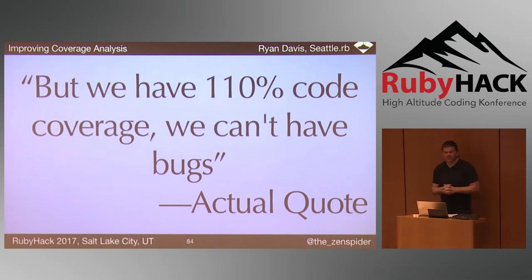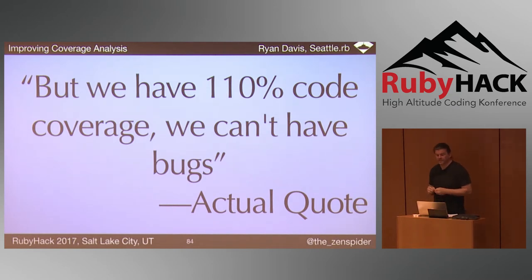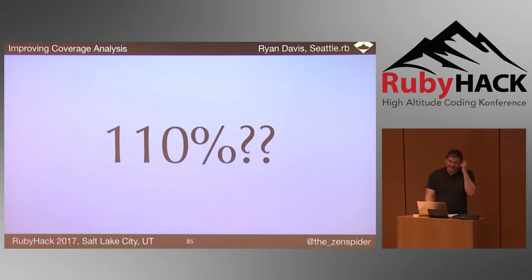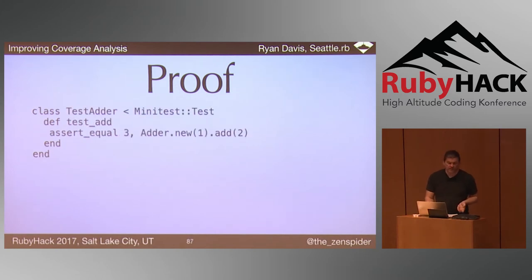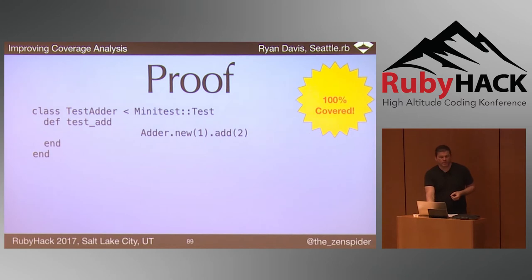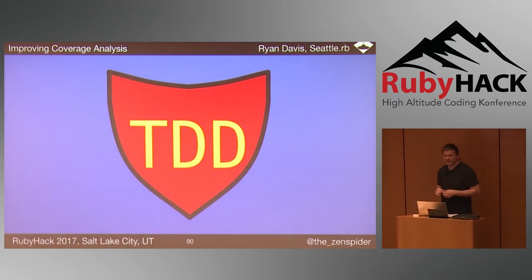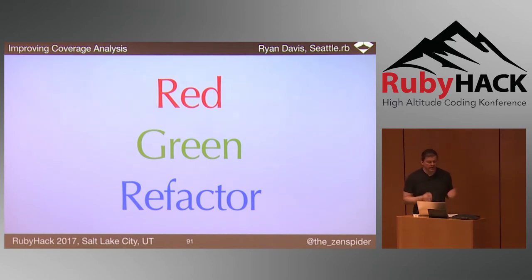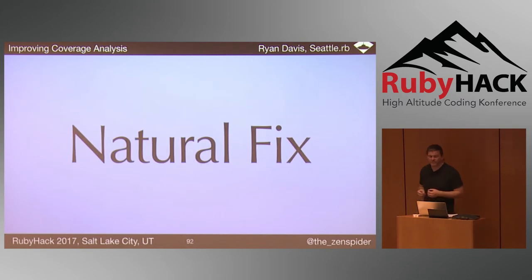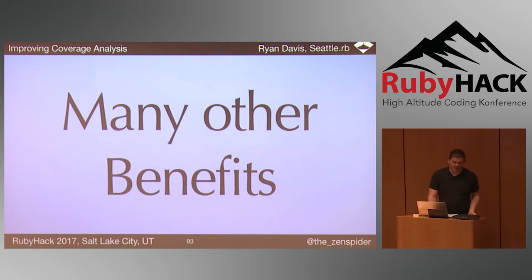It seems to be a common misconception that high code coverage implies good testing and therefore good code. This is actual code given to an engineer reporting a bug — what does 110% even mean? It means you're lying. Proof: given the previous example, if you take the assertion and remove it, you still have 100% coverage, but there's no verification that you're doing the right thing. That's where TDD can come to the rescue — by intentionally writing a failing test and only writing what it takes to make it pass, you're ensured coverage and avoided gaming numbers.